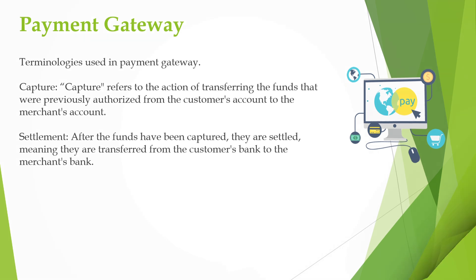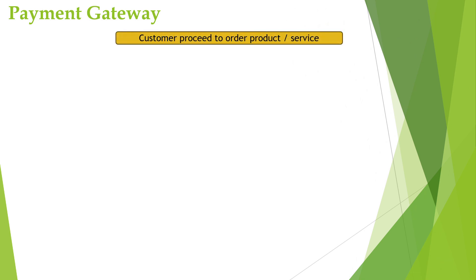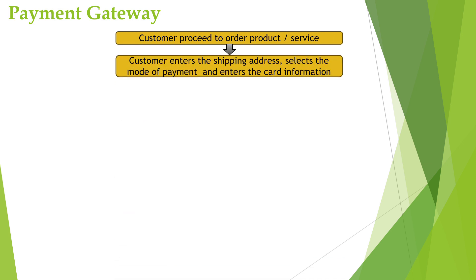Next we will see how the transaction flow happens. Here you can see a flowchart of how the transaction flow works. When a customer wants to purchase a product, he selects the product and proceeds to place the order. When he clicks on 'Place Order,' he is redirected to a page where he needs to fill in the shipping and billing details and select the mode of payment.